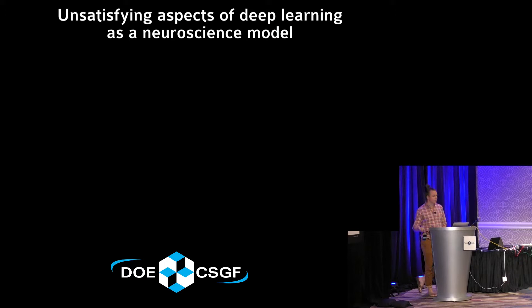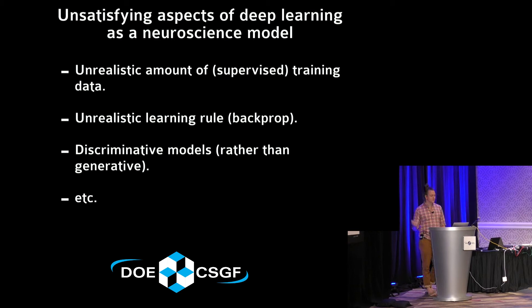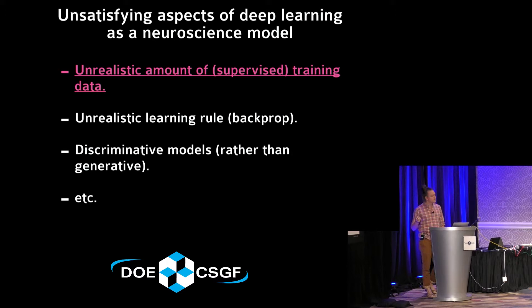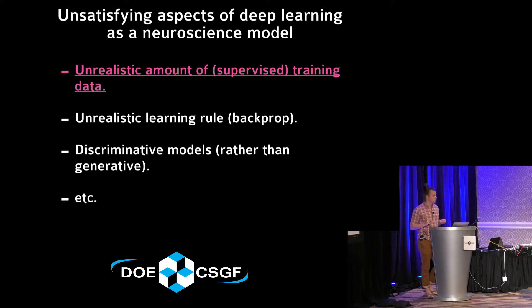There's a lot to be excited about with deep learning — it can generate artificial systems that do some of the things you and I do, as well as we can do them. But there are also unsatisfying aspects as models for neuroscience. For instance, deep learning models often require a huge amount of labeled training data — far more than a child needs. Despite these very different methods of arriving at a solution, it seemed plausible that the brain and the network might converge on a somewhat similar result.